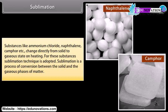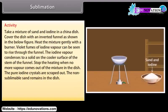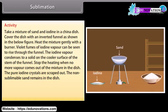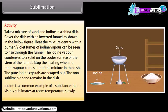Sublimation: Substances like ammonium chloride, naphthalene, and camphor change directly from solid to gaseous state on heating. For these substances, the sublimation technique is adopted. Sublimation is a process of conversion between the solid and the gaseous phases of matter. Activity: The pure iodine crystals are scraped out, while the non-sublimable sand remains in the dish. Iodine is a common example of a substance that visibly sublimates at room temperature slowly.